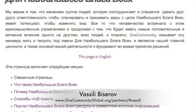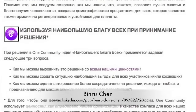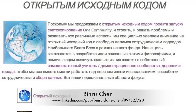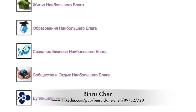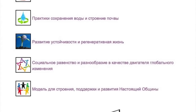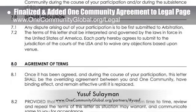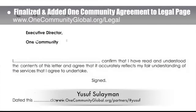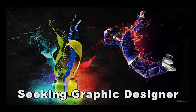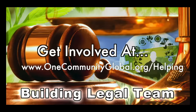Behind the scenes, Binru Chen, accountant specializing in audit and financial reporting, helped create open source for-profit and nonprofit income statements that will soon be part of the tax considerations and strategy page. This work is about 40 percent complete behind the scenes and 20 percent complete on the site. We also finalized and added the community member agreement to the One Community legal page — work of Yuse Soliman, a lawyer and member of the Nigerian Bar Association, added as an open source template for others forming similar agreements. We are seeking graphic designers, web designers, technology specialists, videographers, and are building a highest good legal team.